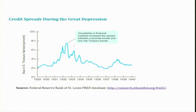Looking at the credit spread during the Great Depression, the uncertainty in financial markets increased the spread between corporate bonds and low-risk Treasury bonds. You can see that this credit spread increased further and further during this period, making it more and more expensive for borrowers to borrow as interest rates for private firms increased.